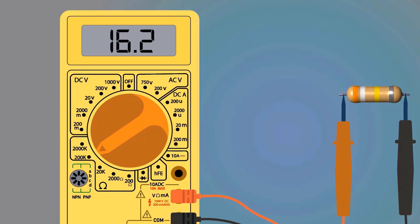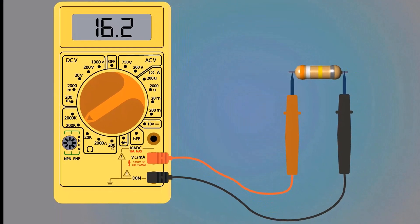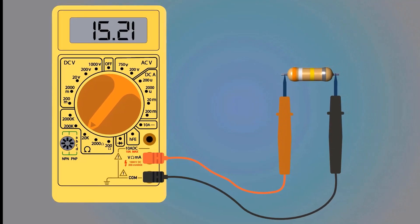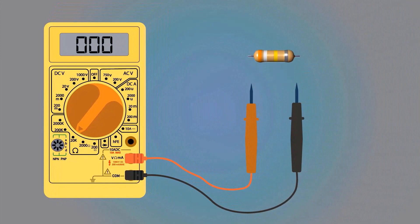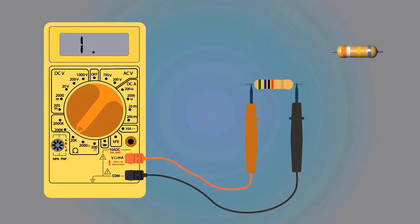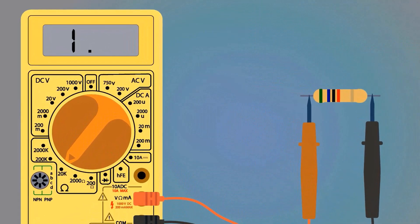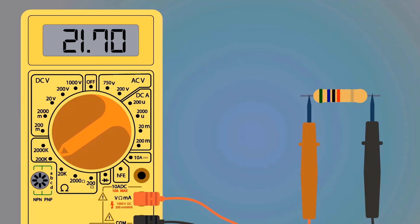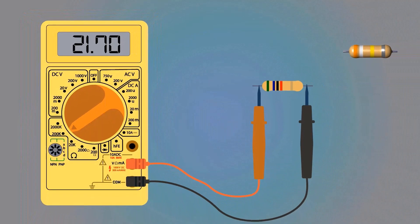At this range, the display shows 16.2 kilo-ohm. We know that 16.2 kilo-ohm is less than 20 kilo-ohm, so for an accurate value we have to select the 20 kilo-ohm range with the selector switch. Now the display shows 15.21 kilo-ohm, which is the correct resistance value. Let's take another resistor — when the probes are connected, the display shows 1, meaning the selected range is too low. Selecting 200K range, the multimeter displays 21.70 kilo-ohm, which is the correct value.